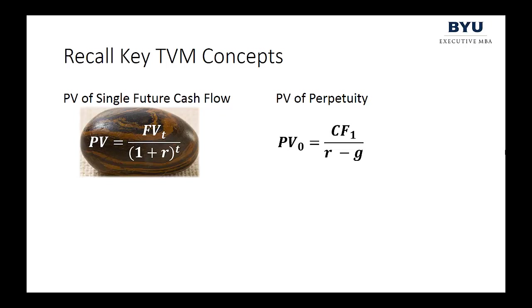I have here the formula for the present value of a single future cash flow. We referred to this as the cornerstone, keystone, seer stone formula of finance. I hope by this point in the course you can see why that's such an important formula. I also want to remind you of the formula for the present value of a perpetuity. You can see both of these formulas on the screen — we covered both of these previously.